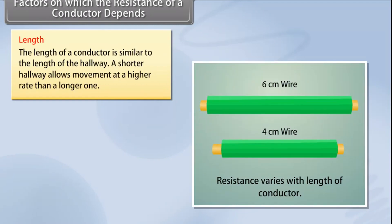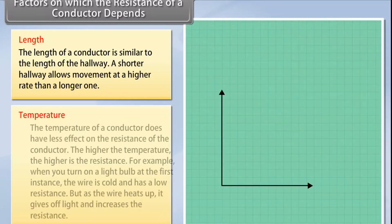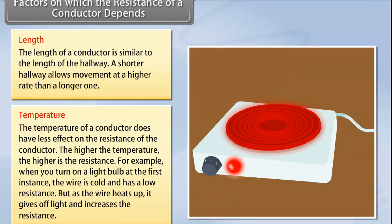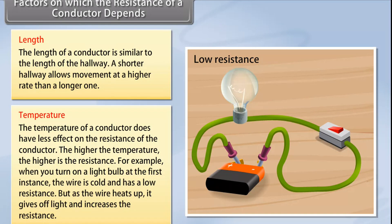Length: the length of a conductor is similar to the length of a hallway. A shorter hallway allows movement at a higher rate than a longer one. Temperature: the temperature of a conductor has a significant effect on its resistance. The higher the temperature, the higher is the resistance. For example, when you turn on a light bulb, the wire is cold and has a low resistance. But as the wire heats up, it gives off light and increases in resistance.